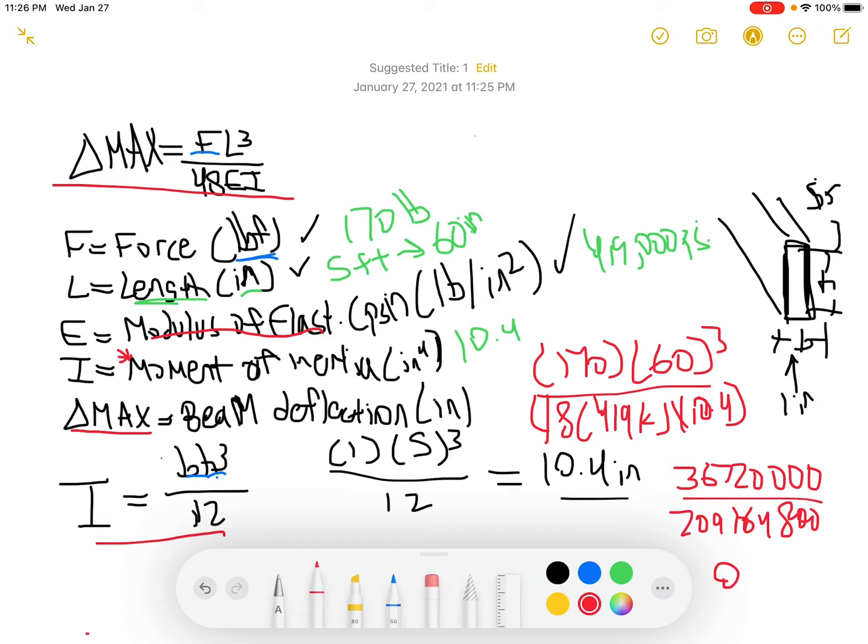Now let's do 36,720,000 divided by 209,164,800 and we get a pretty small number but it's 0.18 inches. That's the units for that.